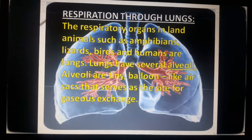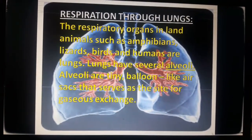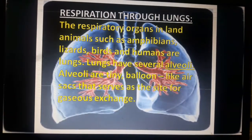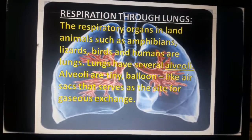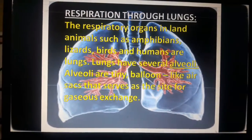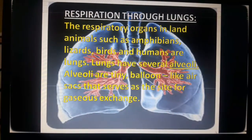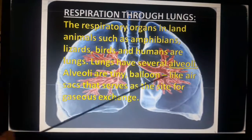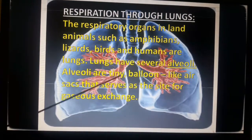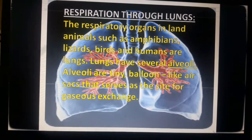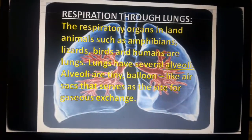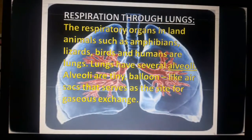Next is respiration through lungs. The respiratory organ in land animals such as amphibians, lizards, birds and humans are lungs. In the case of amphibians, when they are in water, they breathe through their moist skin. Lungs have several alveoli. Alveoli are tiny balloon-like air sacs that serve as the site for gaseous exchange. In the next video, I will deal with the respiratory system in humans.